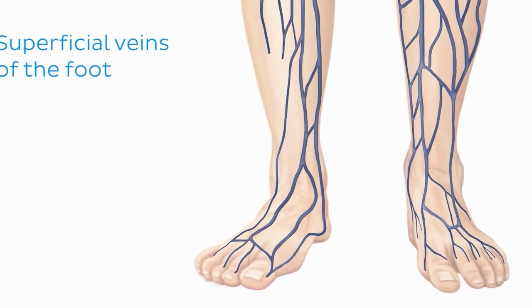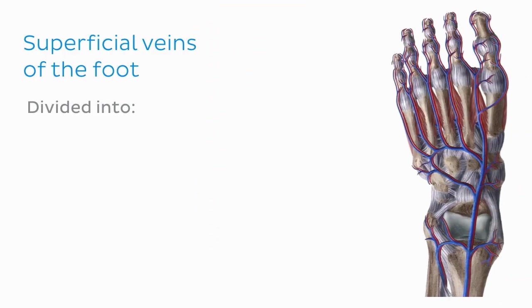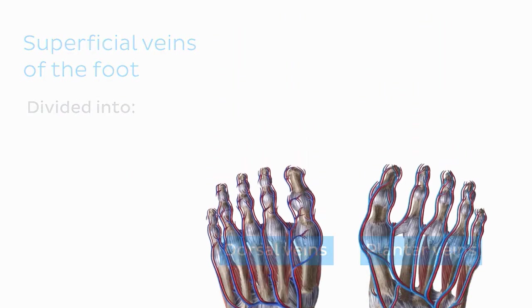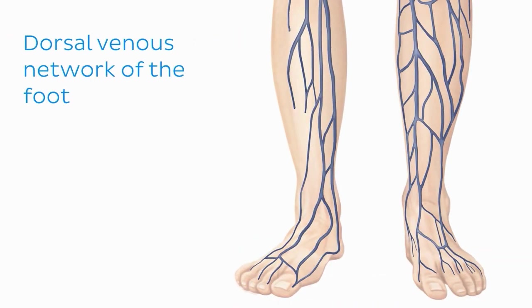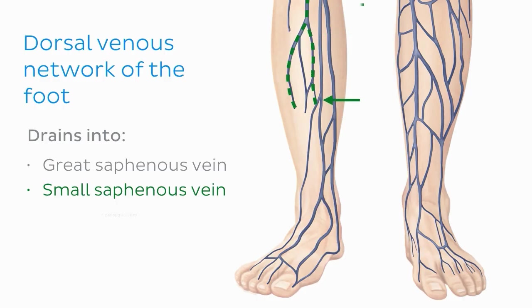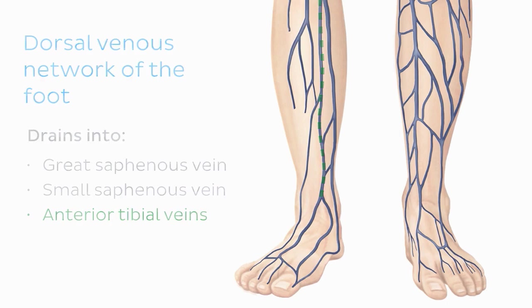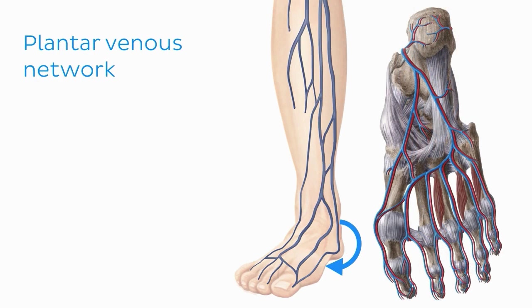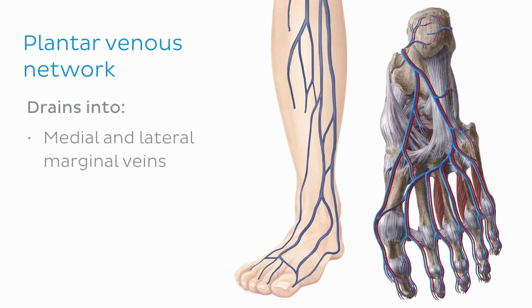Starting with the foot, the veins can be divided into dorsal veins on the top of the foot and plantar veins on the bottom of the foot. The dorsal venous network of the foot is an example of superficial veins found on the upper surface, and this network drains into the great saphenous vein medially and into the small saphenous vein and the anterior tibial veins laterally. On the plantar aspect of the foot is the plantar venous network, which is also superficially located and mainly drains into the medial and lateral marginal veins.